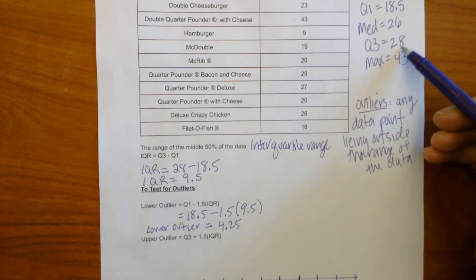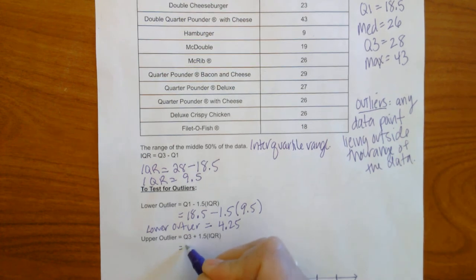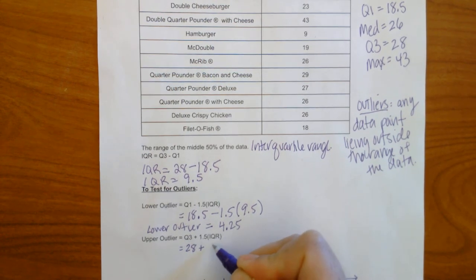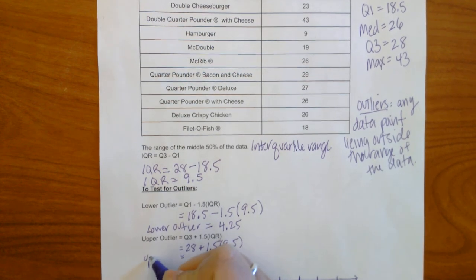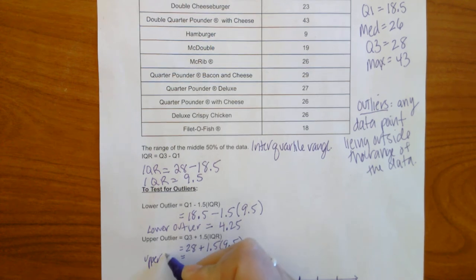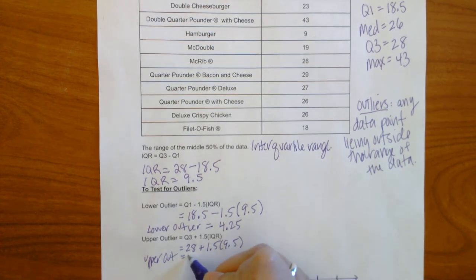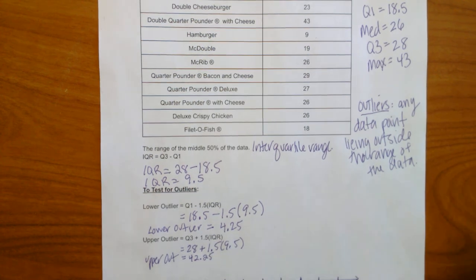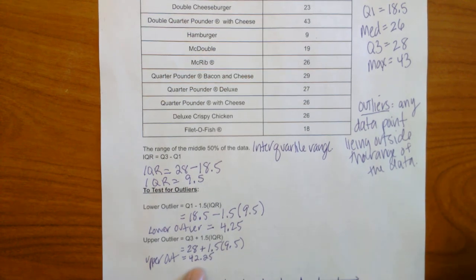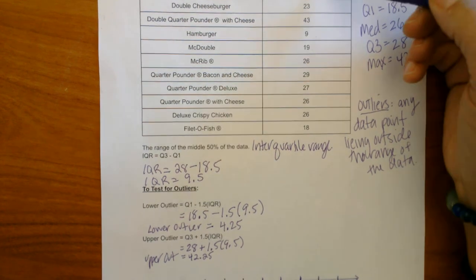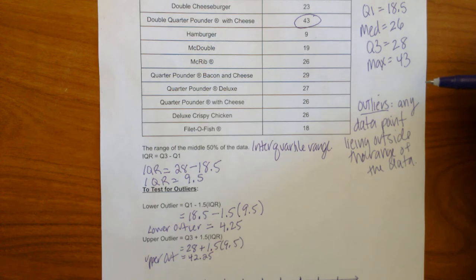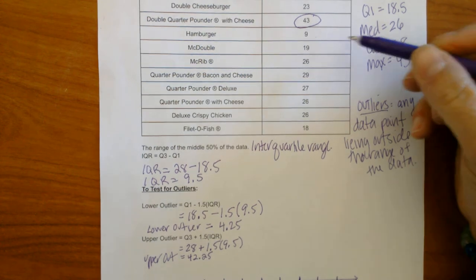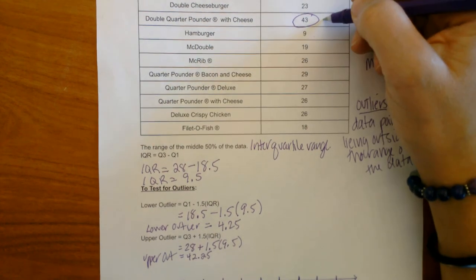Okay, let's test for our upper outlier. So we're going to take Q3, 28, and we're going to add this time 1.5 times the IQR. And when we come out our upper outlier is going to be 42.25. So we have to look at our data and any number greater than 42.25 is going to be an outlier. There's the bell again. So here we have 43 and that's actually our max. So are there any other ones? Nope. So 43 is an upper outlier.